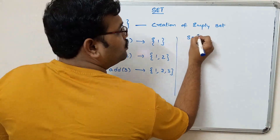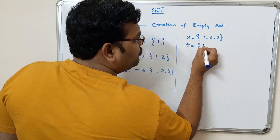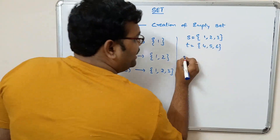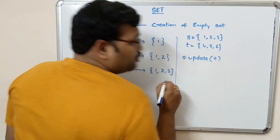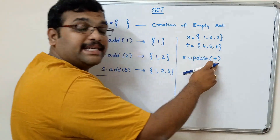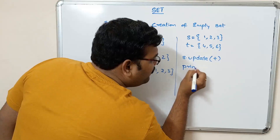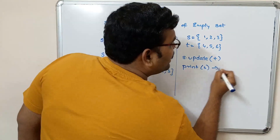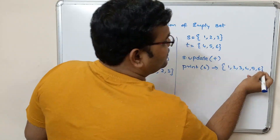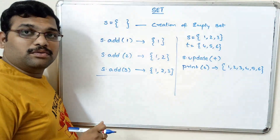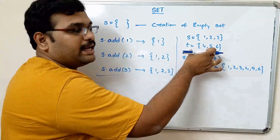We can also directly update the set with another set. For example, s = {1, 2, 3} and t = {4, 5, 6}. If you call s.update(t), and then print s, you will get {1, 2, 3, 4, 5, 6}. Alternatively, t.update(s) will merge s into t.